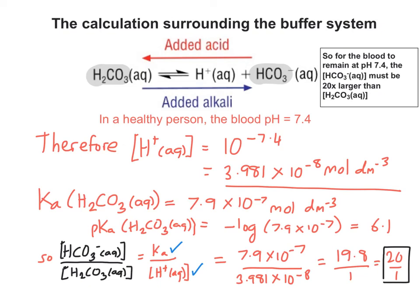Hopefully you've found this a useful introduction to how we can apply buffers to biological situations, such as keeping the blood in the correct pH range. You can see clearly that it's all about the ratio of the weak acid to the conjugate base, because that's key to the workings of the buffer. And the pH that the buffer maintains will depend on the correct ratio of those two particular chemicals being maintained.